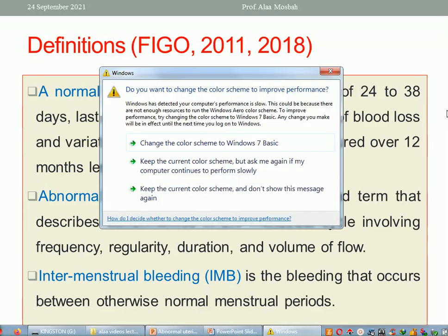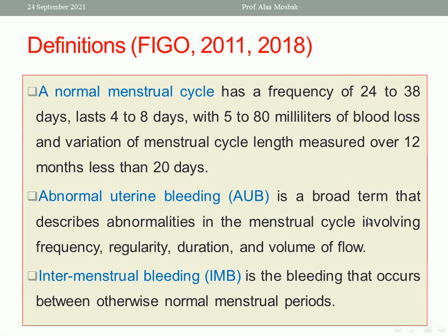What about abnormal uterine bleeding? This is a broad term describing abnormalities in the menstrual cycle involving frequency, regularity, duration, and volume of flow. Inter-menstrual bleeding is defined as bleeding that occurs between otherwise normal menstrual periods.